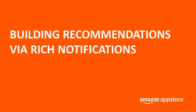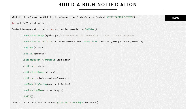Now let's see how we can build the rich notifications that will generate our recommendations. The first step is to build a notification manager, which will be used to push the rich notification to the OS. We then need an ID for the notification, which we will use to uniquely identify it. This is very useful in particular to retrieve specific recommendations and update them in the future, or delete them if we don't need them anymore.